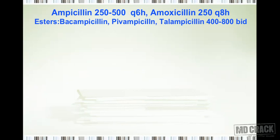For aminopenicillin dosing: ampicillin is given at 250 to 500 mg every six hours. Amoxicillin is given at 250 mg every eight hours — a slightly smaller dose. The esters of ampicillin — bacampicillin, pivampicillin, and talampicillin — are given at 400 to 800 mg twice daily, since they are esters and produce a longer effect.